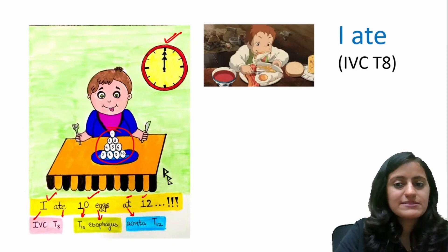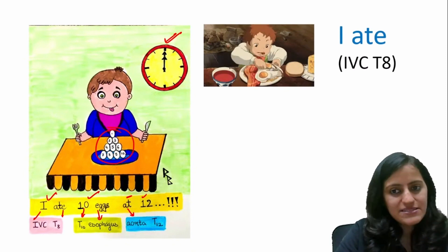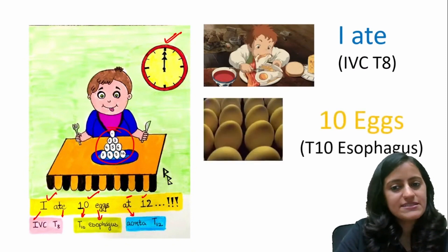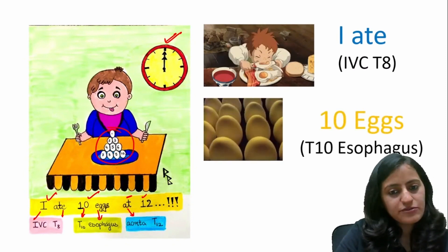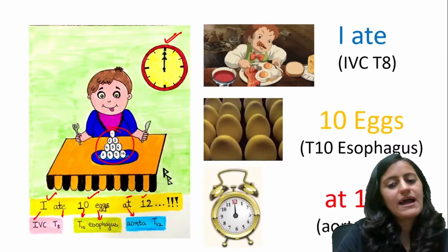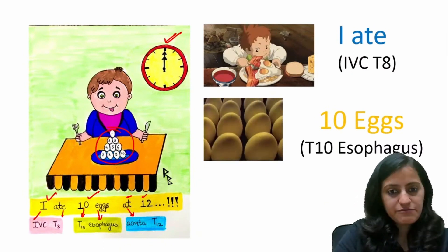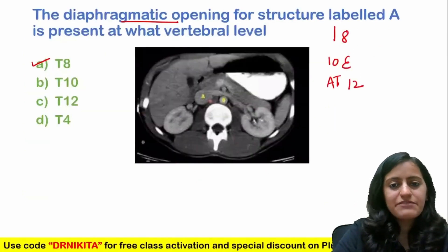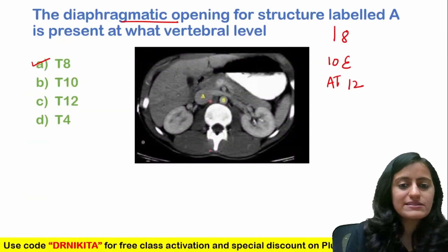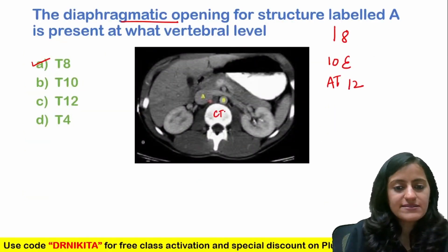Remember: I8 — that is IVC at T8; T10 — esophagus; and aorta is at T12. Now identifying the structure in the CT scan: